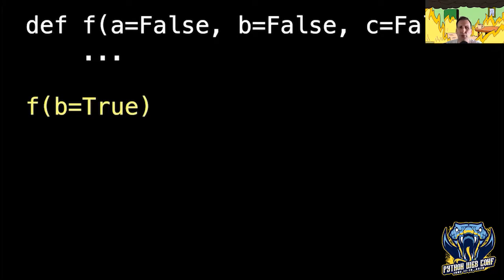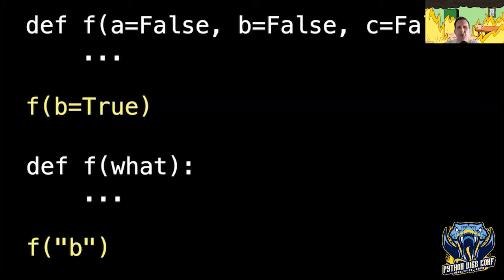Speaking of passing arguments: suppose you have a function and want to tell it about a mutually exclusive option — either A, B, or C, but only one. You could take three booleans defaulting to false and require the user to set exactly one true, but then you must validate at runtime and are forcing keyword-style arguments when there's really just one argument. Another common approach is to pass strings, but again you have to verify at runtime, and it makes the function a parser.